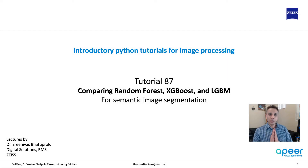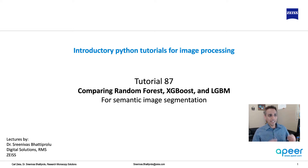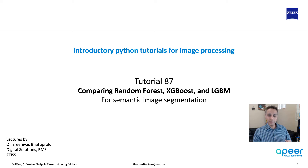Hi everyone, welcome to Python Tutorials with a special focus on image processing. In the last video we looked at boosting, gradient boosting, and we also had a brief look at XGBoost and LGBM, two libraries in Python that are based on gradient boosting. Now in this video, let's put this to test — let's actually perform semantic image segmentation using Random Forest, XGBoost, and LightGBM and see which one wins.